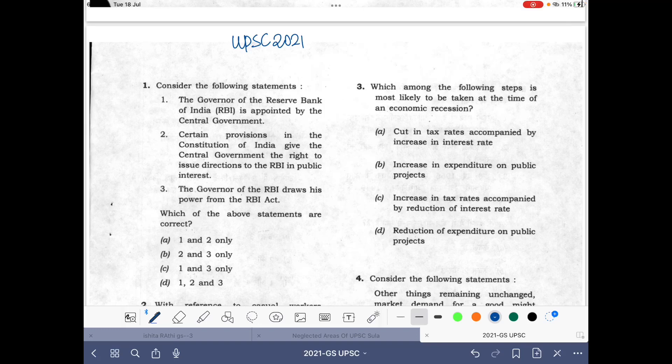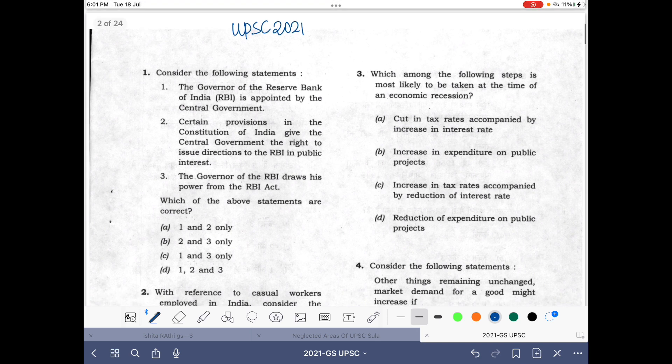Hello dosto, we are analyzing the question paper of UPSC 2021. This question is on RBI Governor. It says the Governor of the Reserve Bank of India is appointed by the central government. This statement is correct as per the RBI Act 1934.